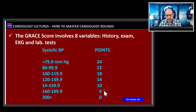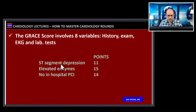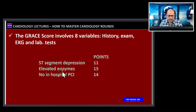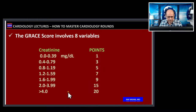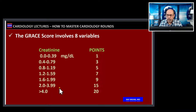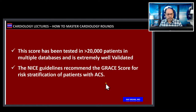ST-segment depression accounted for 11 points. Elevated cardiac enzymes accounted for 15 points. The absence of PCI in-hospital increased the point total. Regarding creatinine: a normal creatinine of around 1.22 carries a risk score of five, but it nearly triples if creatinine rises to 2–4 mg/dL. This scoring system has been tested in more than 20,000 patients across multiple databases and found to be extremely reliable and validated.